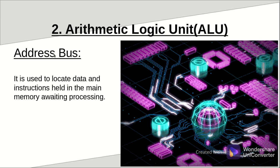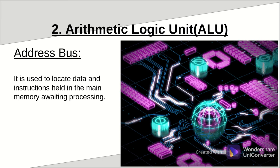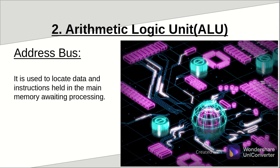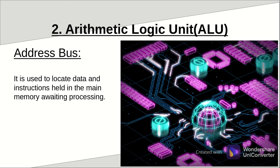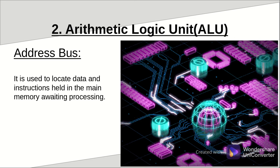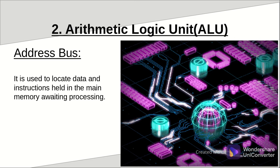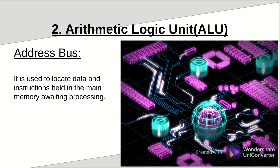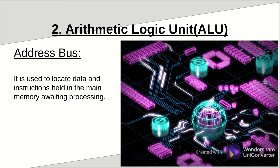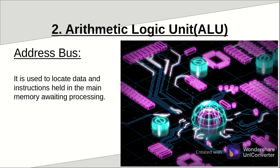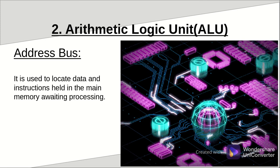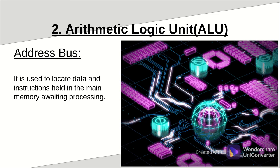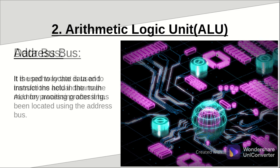Just from the name — address — an address is a location. Remember, for any data and instruction to be executed it is first held in the main memory as it awaits. The address bus is used to locate that piece of data or instruction, meaning it is used to determine the physical position where it is being held within the main memory. The main memory is divided into addresses so that data and instructions are not mixed up, and so that we can locate a specific data or instruction using the address bus.